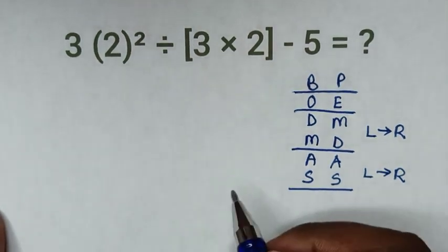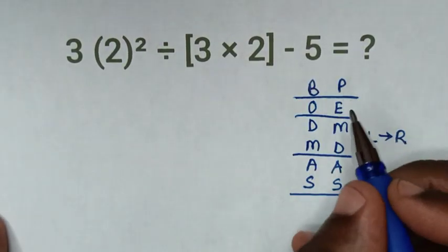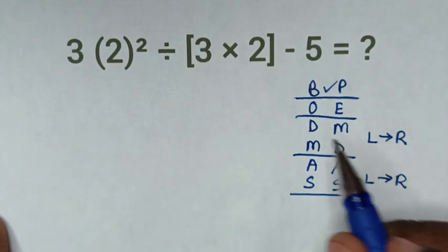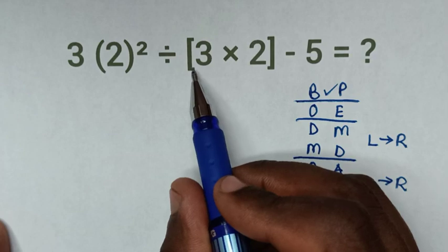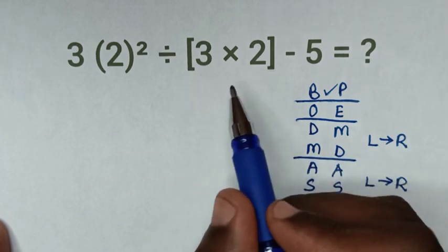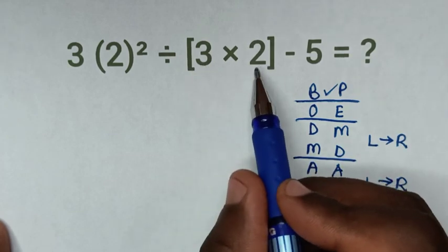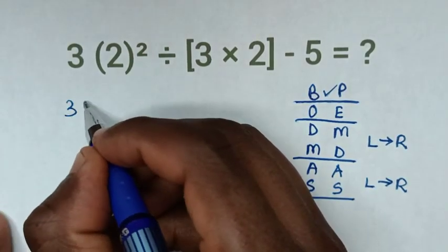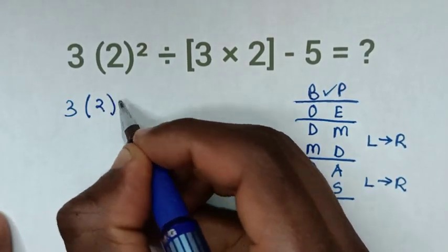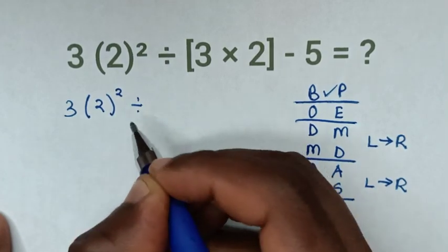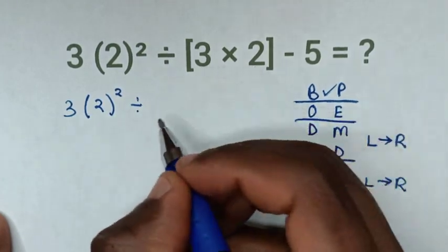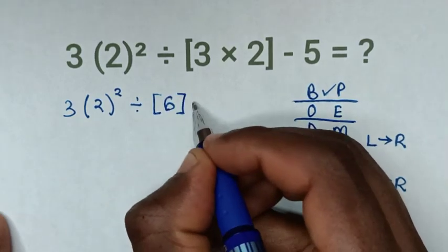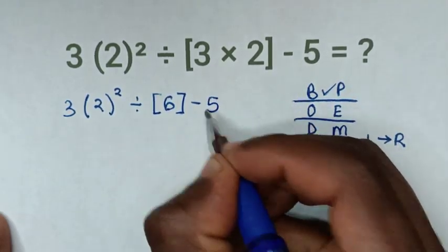Now let's start to solve this math problem. We start first with bracket or parenthesis. Inside the squared bracket we have 3 times 2, which is 6. So it will be 3 parenthesis 2 parenthesis squared, divided by squared bracket 6 squared bracket, then minus 5.